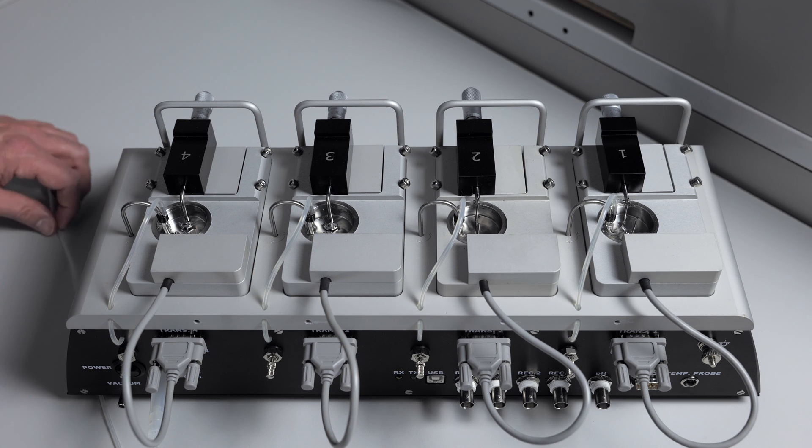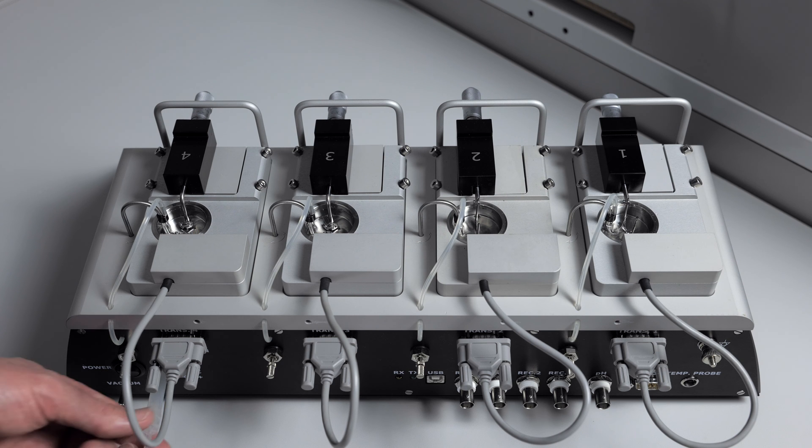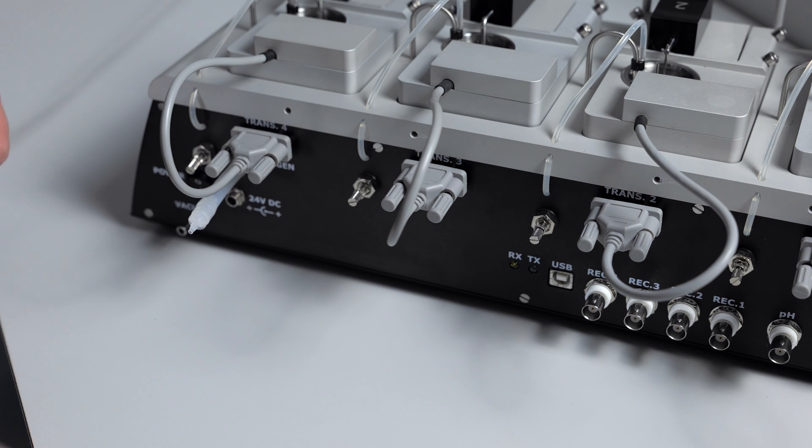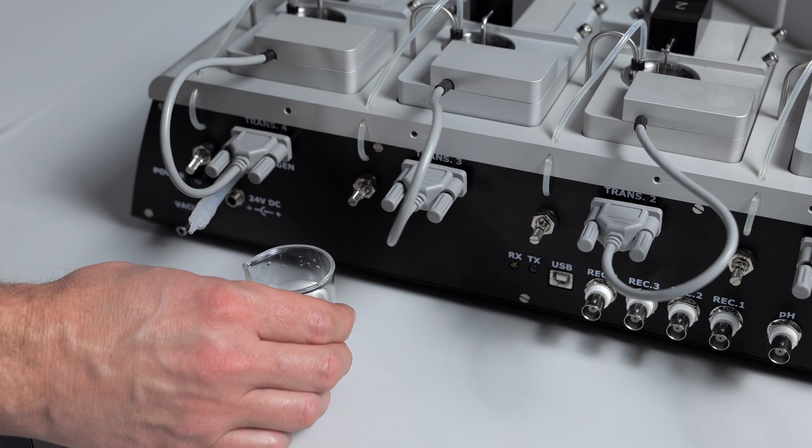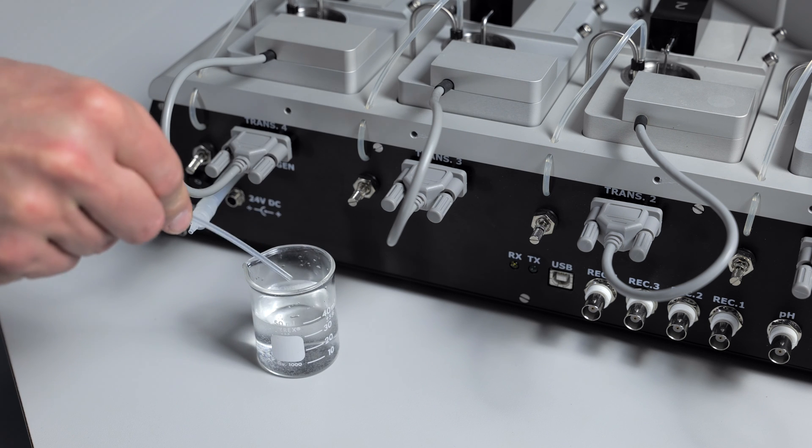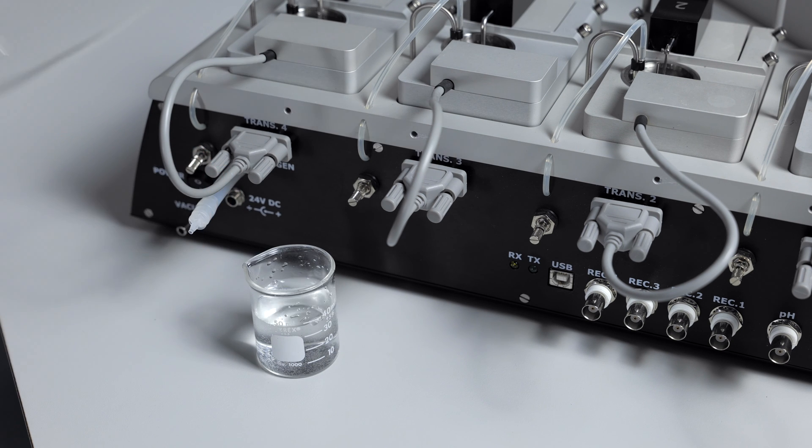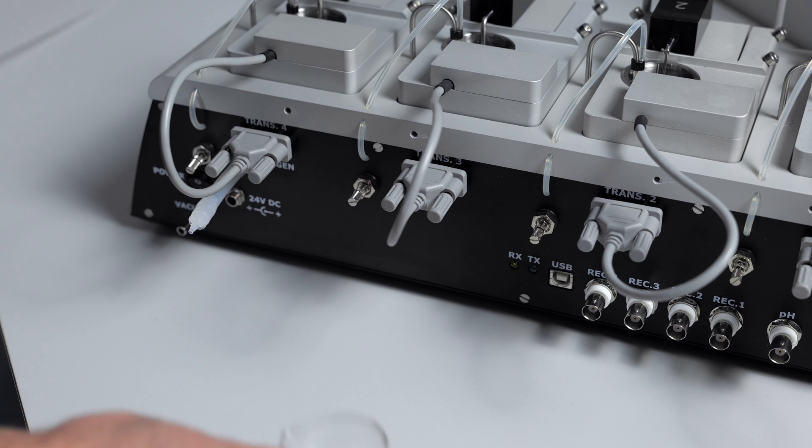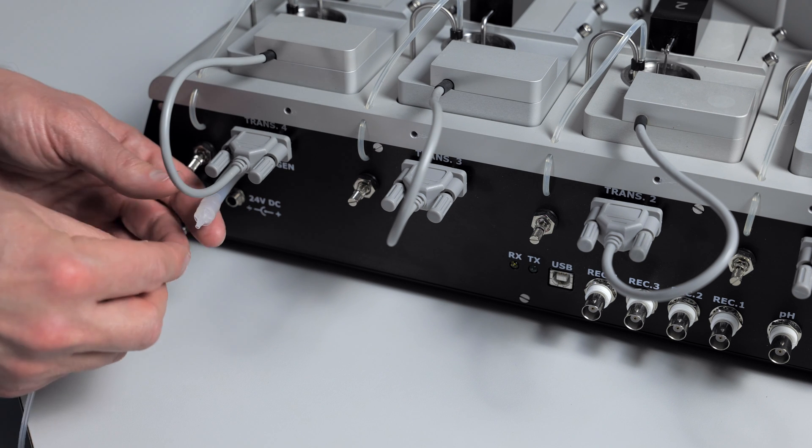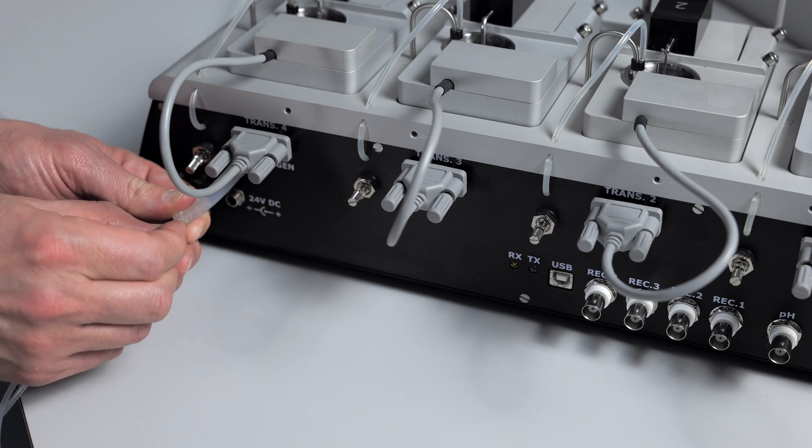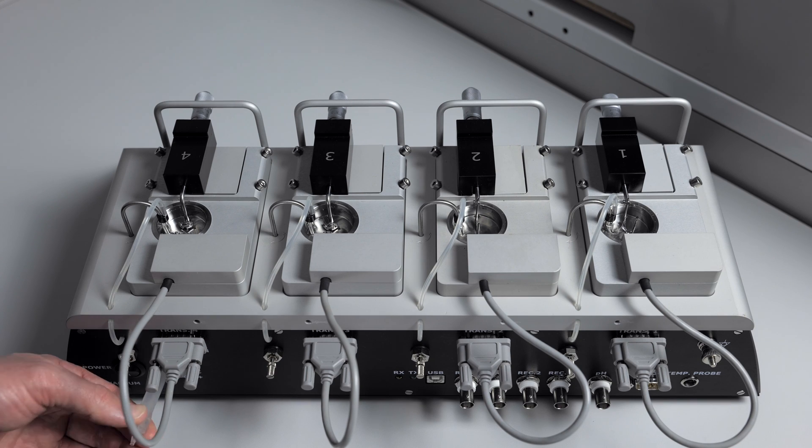To do that, remove the tubing and grab the beaker of water and see if you have bubbling. If you have bubbling in the beaker and no bubbling in your chambers, and all your needle valves are open, then you have a clogged gas line and you'll need to contact your DMT representative for shipping and repair instructions.